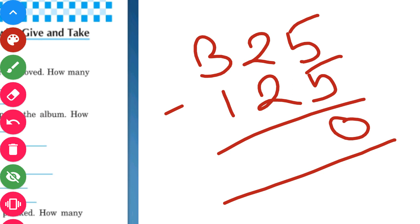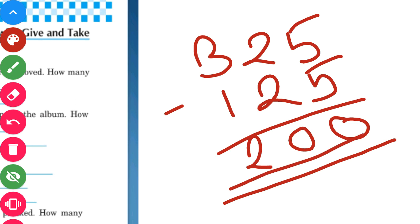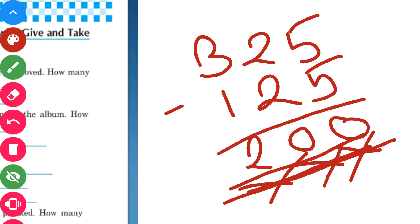325 minus 125 — 5 minus 5 gives 0, 2 minus 2 gives 0, and 3 minus 1 gives 2. So our answer is 200. That means 200 stamps are left with Priya.